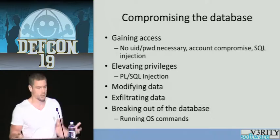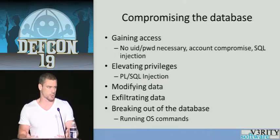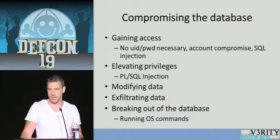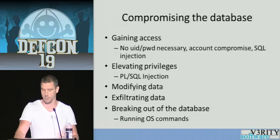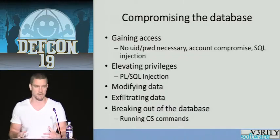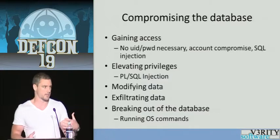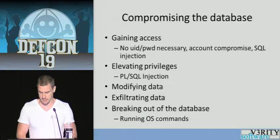In a typical database compromise, there are several stages. First, there's gaining access. Once they've managed to gain access, they need to elevate privileges if they want full control over the database server. Once they've got the requisite privileges, they might want to modify data or exfiltrate data. And thereafter, they might want to use that database server as a staging platform to attack the rest of the network — breaking out of the database to run operating system commands and download their toolkits.